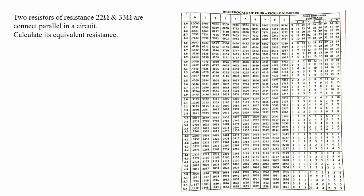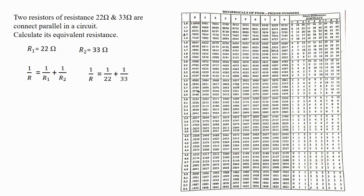Let's solve a numerical example. Two resistors of resistance 22 ohm and 33 ohm are connected in parallel in a circuit. Calculate the equivalent resistance. Given: R1 = 22 ohm, R2 = 33 ohm. The equivalent resistance formula when two resistors are connected in parallel is: 1 upon R = 1 upon R1 plus 1 upon R2. Substituting the values: 1 upon R = 1 upon 22 plus 1 upon 33.